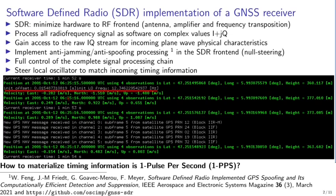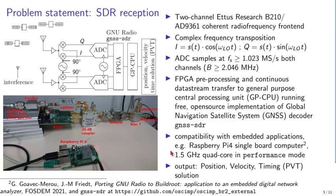We have all this information about localization, local time, and virtual information about the characteristics of the local clock. The question is: how can we materialize a hardware 1 PPS signal out of this software information provided by GNSS-SDR?